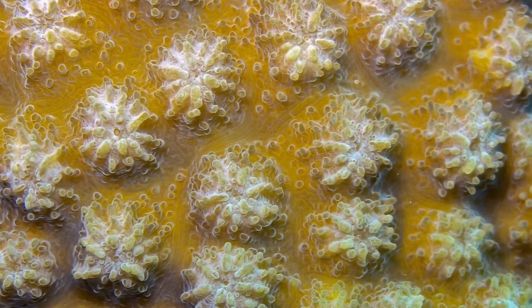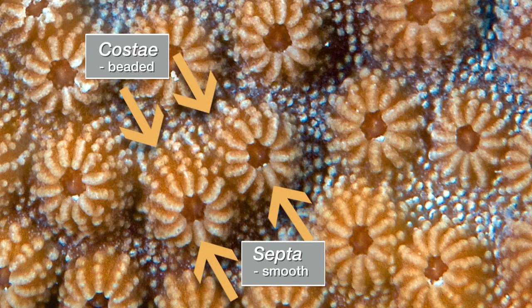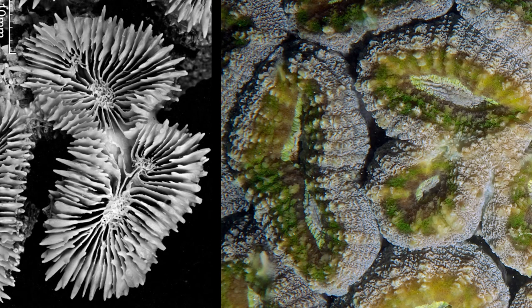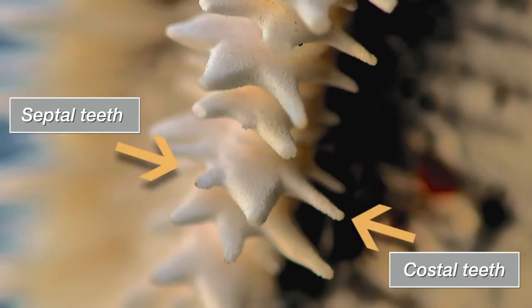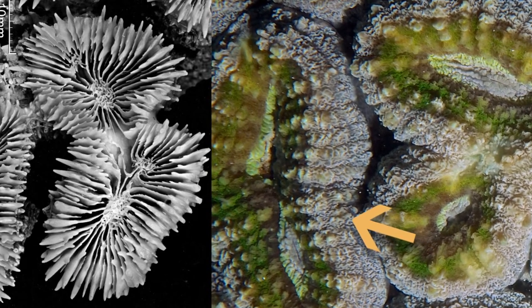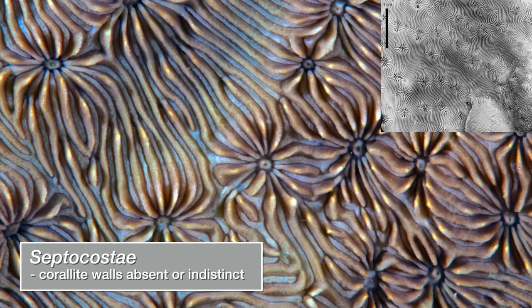Taxonomists often use these features as part of species descriptions. In this photo, the costi, but not the septa, are beaded. Note how the colony surface is also beaded. This is a coral with meandering polyps and separate walls. Note the large teeth lining the septa and costi. These teeth can also be seen as rows of bumps in the tissue of the living animal. In this example, we have a coral with indistinct walls. In the absence of a clear wall, the distinction between septa and costi breaks down.